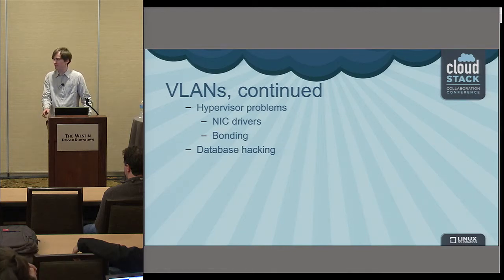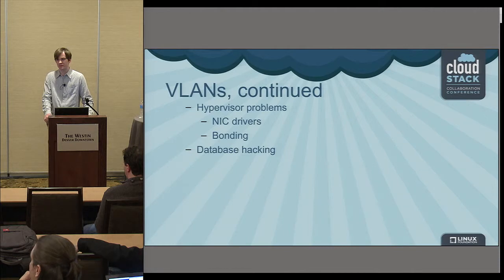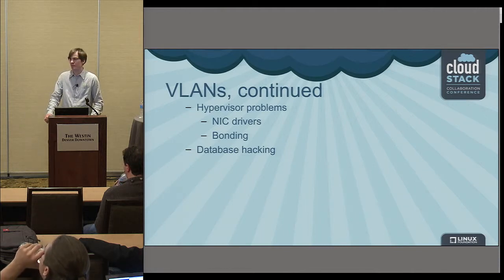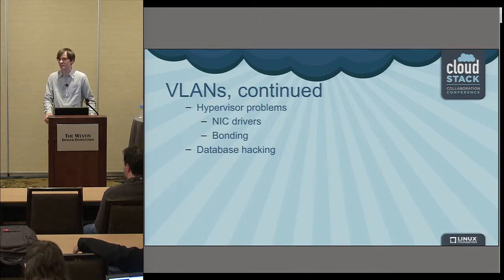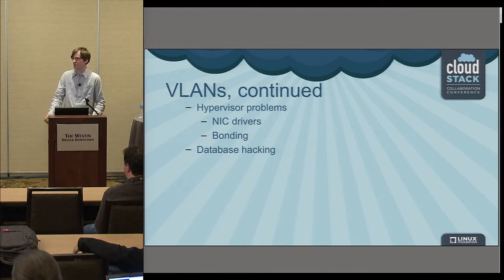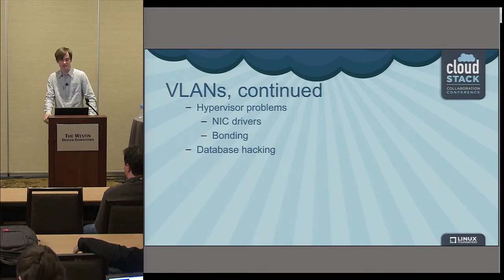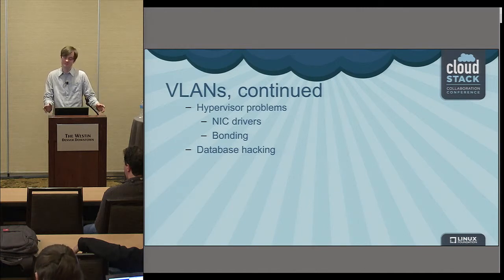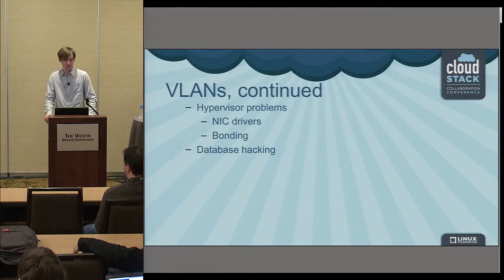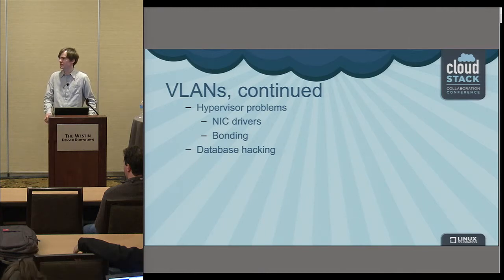Continuing with VLANs, there are more possible problems besides the physical switch — you can also have problems at the hypervisor level. A big one is NIC drivers. The people selling server NICs sometimes don't fully test them with VLANs, so you might need to check and update the NIC drivers, update the Linux kernel, or check with the hypervisor vendor for recommendations on NIC driver versions.